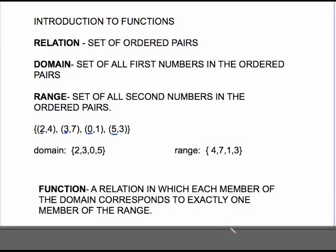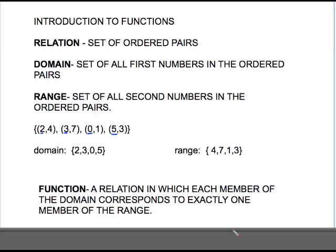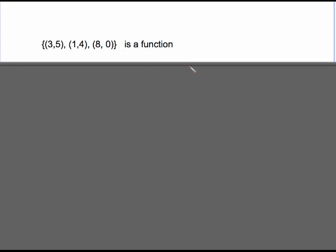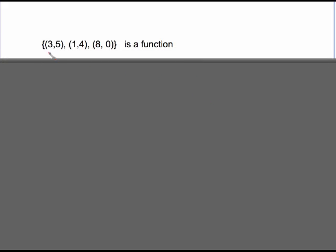A function is a relation in which each member of the domain corresponds to exactly one member of the range. Take something like this. This is a function because each member of the domain has exactly one partner. 3 goes with 5 and nothing else, 1 goes with 4 and nothing else, 8 goes with 0 and nothing else. That constitutes a function.